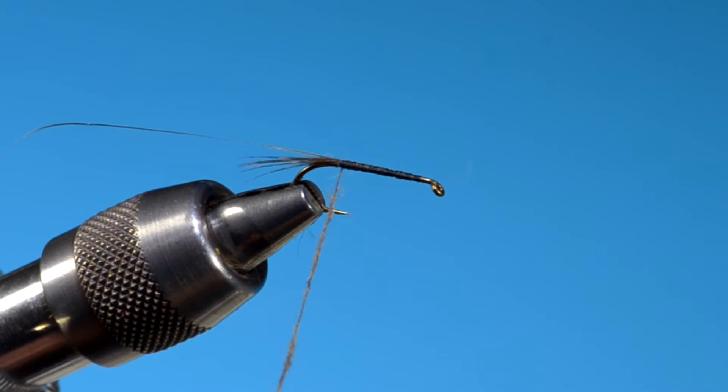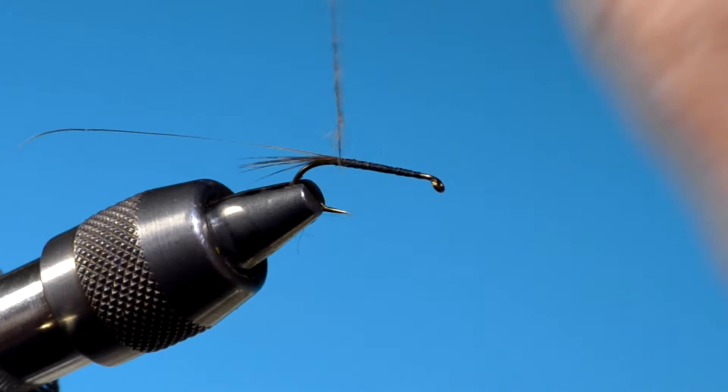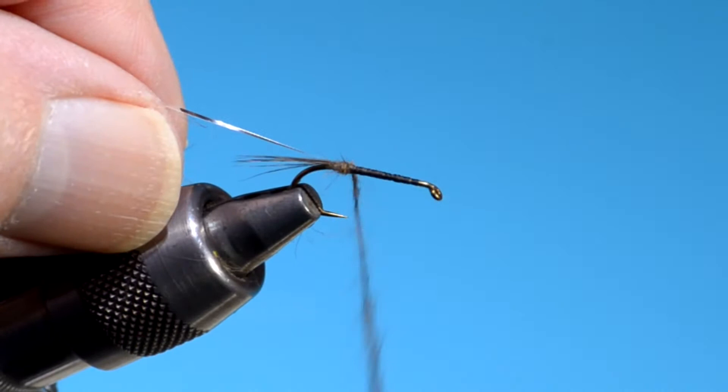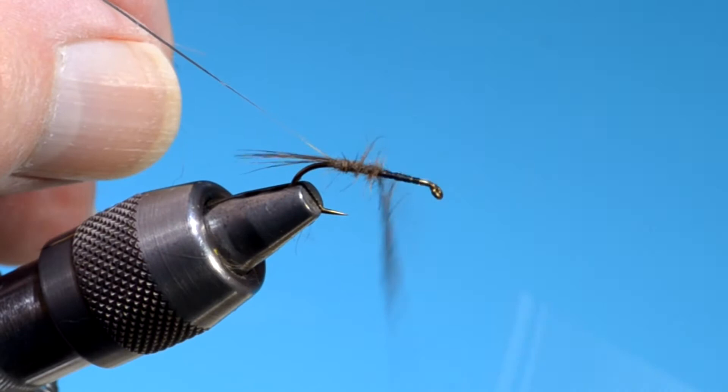And then, as I add more dubbing, from about the midpoint on or so, I want it to get really buggy. And I'll add a lot of guard hairs in, or dubbing that has a lot of guard hairs in it. Because I do want this to look like a bug.